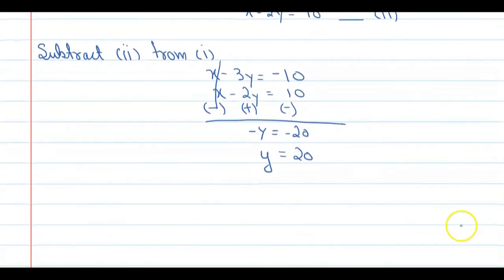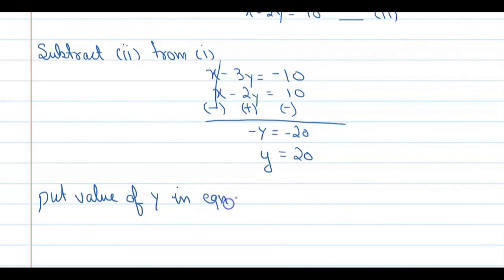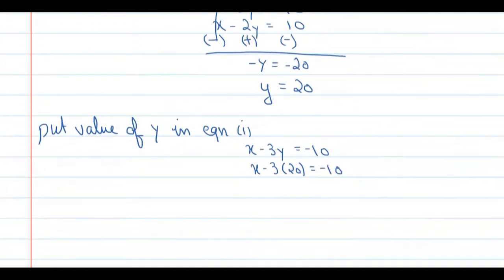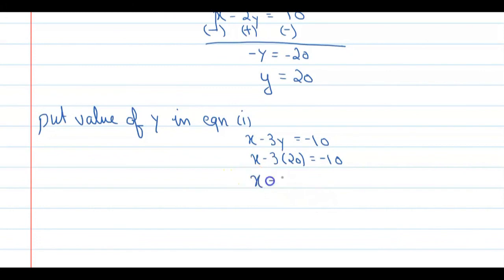Now put the value of Y into Equation number 1. The first equation is X minus 3Y equals minus 10. Substituting Y equals 20: X minus 3 into 20 equals minus 10. So X minus 60 equals minus 10. Therefore X equals minus 10 plus 60, which gives X equals 50.